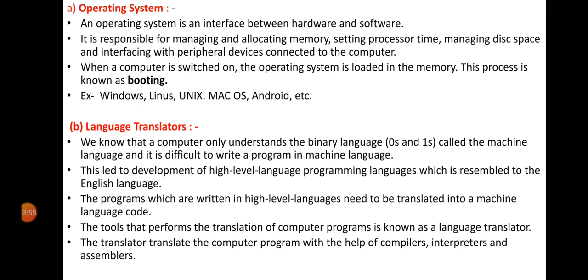The second category is language translator. A computer only understands binary language — zeros and ones — which is called machine language. It is very difficult for us as users to write a whole program in zeros and ones, so machine language is very difficult to use for programming.